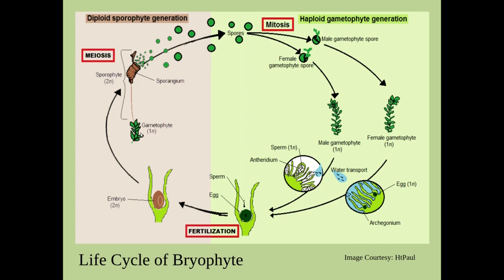Here is a gametophytic plant and this is the sporophyte. This is the capsule attached with the help of seta to the gametophyte. We can see that the sporophyte is dependent upon the gametophyte and is still attached to it. After meiosis in the sporophyte, the spores are produced. These green ball-like structures are spores and then these spores germinate.